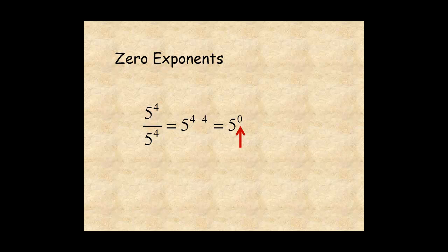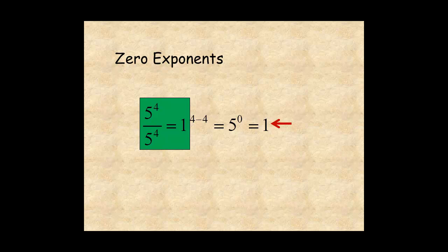Since 5 to the 4 over 5 to the 4 is equal to 1, you can see that 5 to the zero must be equal to 1. So the rule is any expression to the power of zero is equal to 1.